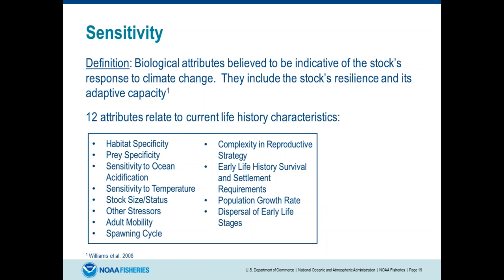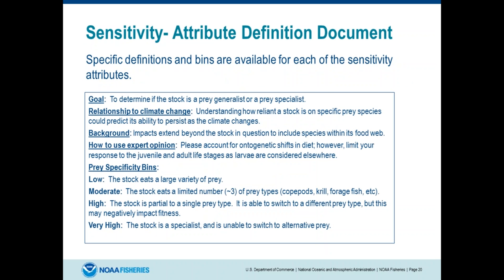For each of the 12 sensitivity attributes, we created a document walking through the specifics of what we meant. For each attribute we explained what we meant, what the relationship with climate change was, and helped define what we meant by a low, moderate, high, or very high ranking. That way, if you have two experts in the room — say a shellfish expert and an expert on highly migratory species — their understanding of what a high score would mean could be very different. So we defined those terms so that any expert coming in would have a clear idea of what we meant, to increase the precision of the scoring.